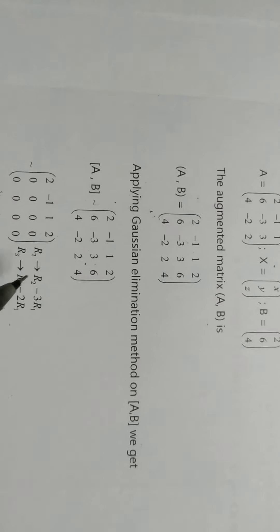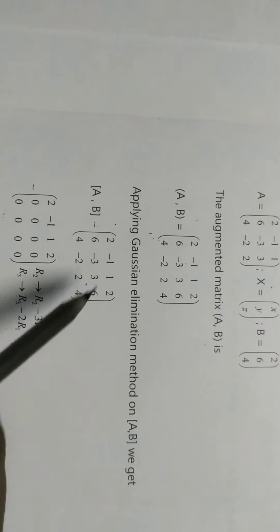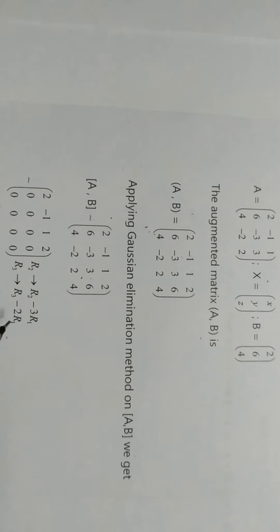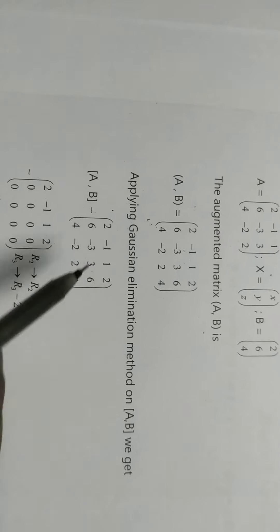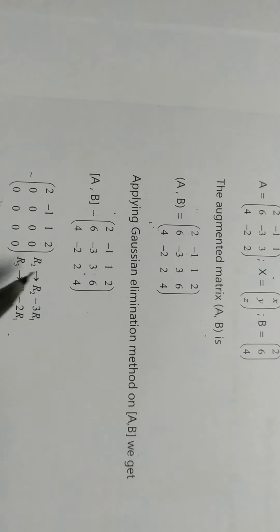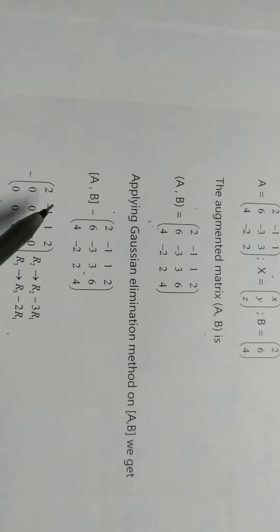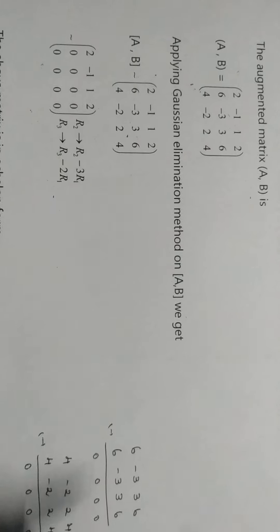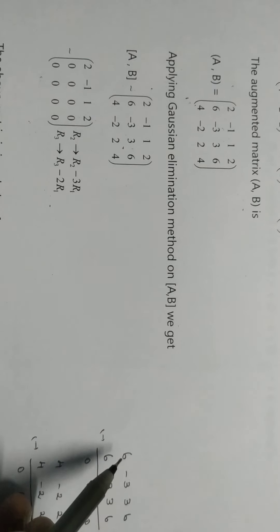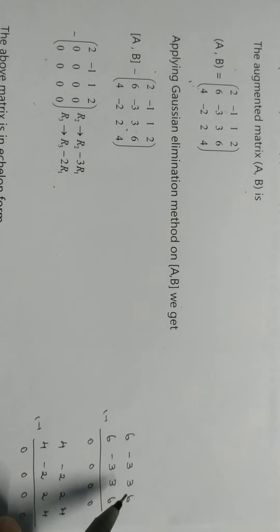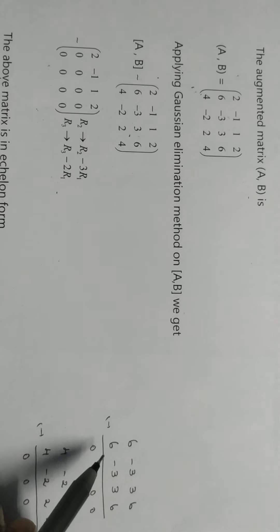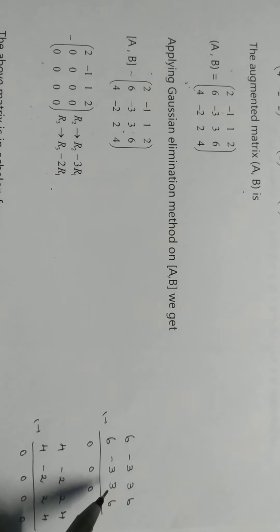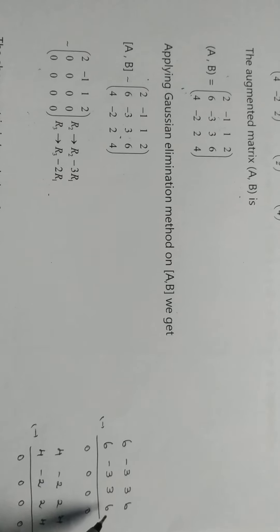First R2 becomes R2 minus 3 times R1. R3 becomes R3 minus 2 times R1. So R1 stays the same: 2 minus 1, 1, 2. For R2: 6 minus 3 times 2 is 0. Minus 3 minus 3 times minus 1 is 0. 3 minus 3 times 1 is 0. 6 minus 3 times 2 is 0.